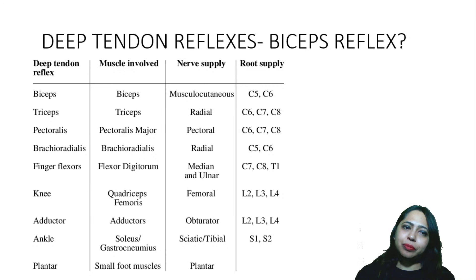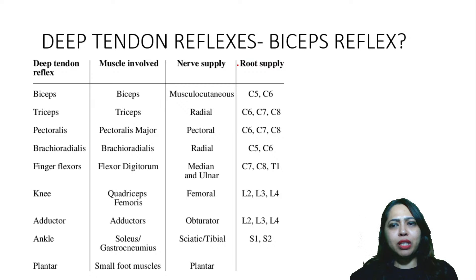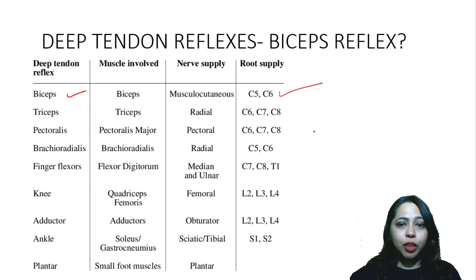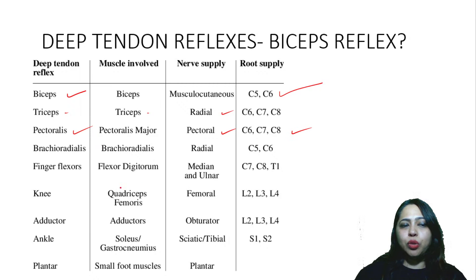Let's move on to the actual class now. The first topic is deep tendon reflexes. For example, the biceps reflex — the musculocutaneous nerve supplies it and the root supply is C5, C6. Triceps is supplied by the radial nerve at C6, C7, C8. Then there is the pectoral nerve with its root value, and the knee at L2, L3, L4. The adductors and ankle and plantar all have specific root values — but how do you remember all this?